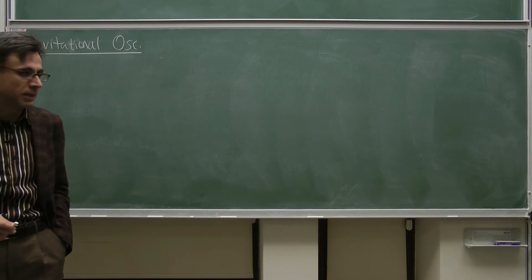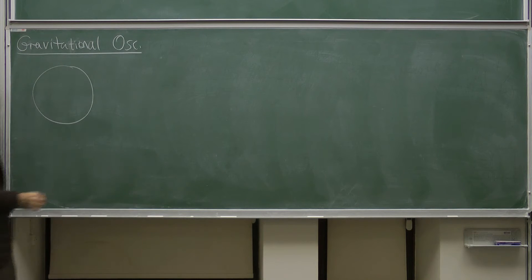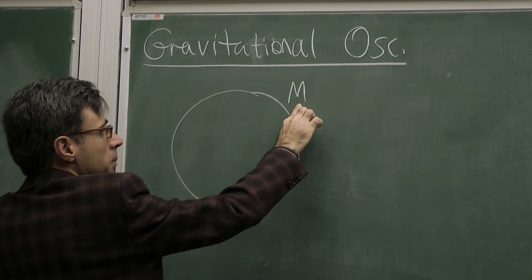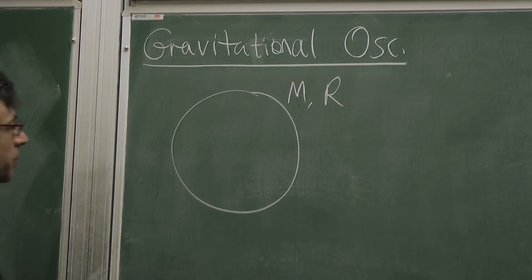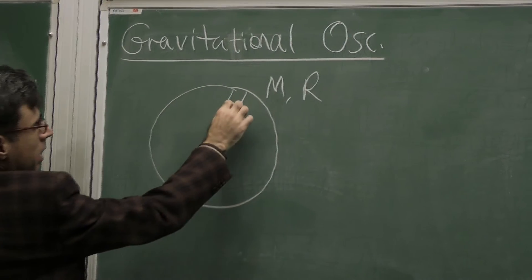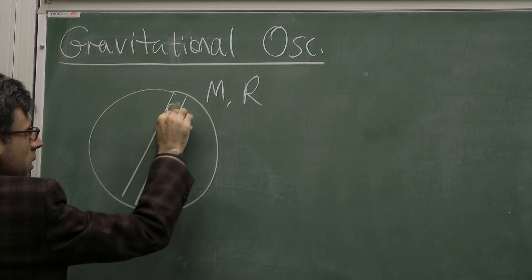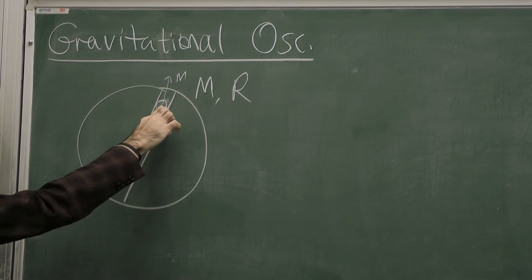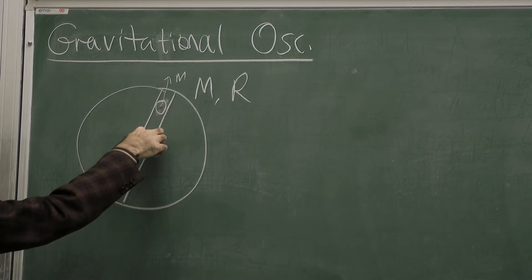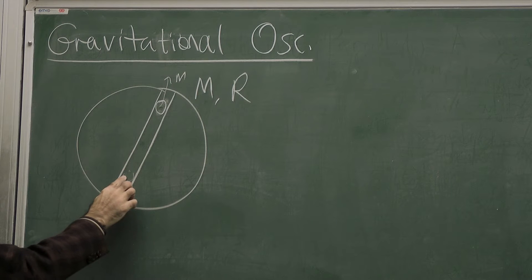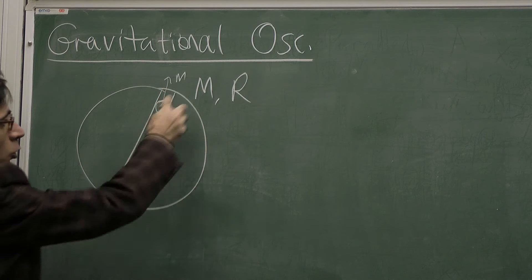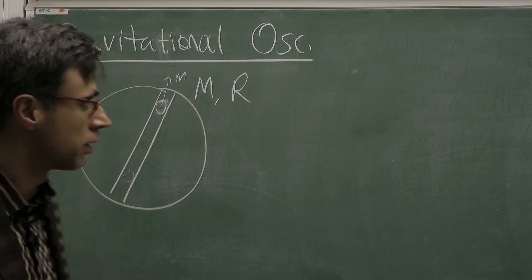The name of the problem is gravitational oscillator. We have a planet with mass M and radius R. We open a tunnel which passes through the center of the planet. If you put a mass m here and release it, due to the gravitational field it will accelerate downwards towards the center. When it reaches the other side, due to the balance between kinetic and potential energy, it will stop and accelerate backwards. So it is an oscillator. The question is: what is the frequency of the oscillation of such an object?